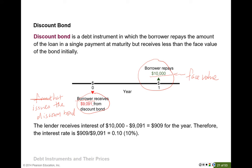The idea of the discount bond is that the borrower at the beginning borrows less than the face value, and then at the end they make only one payment at maturity — simply the face value. Some of you may ask: does the borrower make an interest payment? Yes, the borrower actually makes interest payment. The difference between the face value and the money they borrowed at the beginning — that difference is actually the interest they pay.